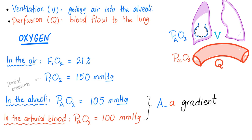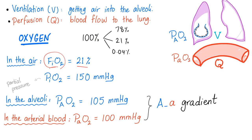Let's talk about oxygen. In the air, first it's called FiO2, which is the fraction of inspired oxygen — the percentage of oxygen in the atmosphere. It's around 21%. Atmospheric air is 100%: around 78% is nitrogen, 21% is oxygen, and 0.04% is CO2. So the 21% is called FiO2, fraction of inspired oxygen. Then there is another concept called PiO2, the partial pressure of inspired oxygen, and it's usually 150 mmHg.